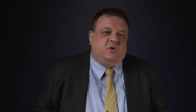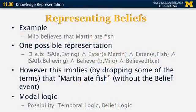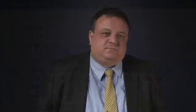What people do instead — and you can look at this in more detail in a course in philosophy or logic — is use something called modal logic. Modal logic allows you to represent higher-order operators for possibility, time, and beliefs. So this concludes the section on knowledge representation.